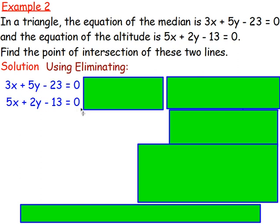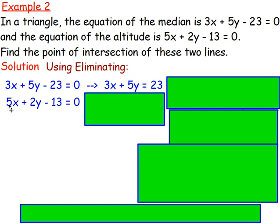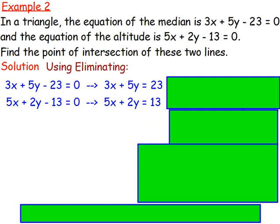For these equations, we do not have them in the form x equals or y equals, and it's not easy to get them into that form. So we use elimination. First, rearrange both equations into the form: something·x add something·y equals a number. For the first equation, move minus 23 to the other side to get 3x add 5y equals 23. Do the same with the second: 5x add 2y equals 13. To eliminate, you need matching coefficients — adding or subtracting these as-is won't cancel x or y.